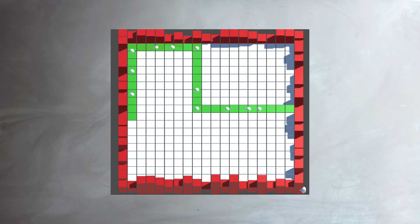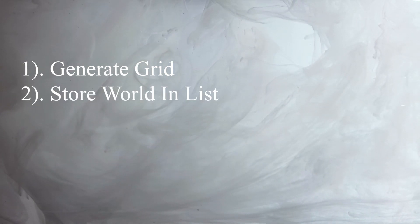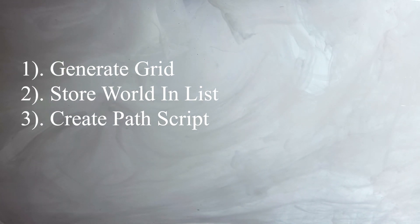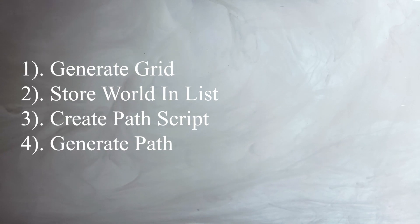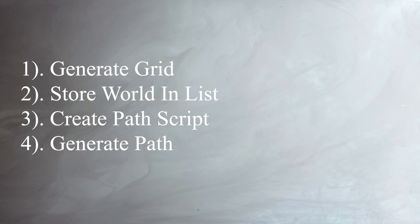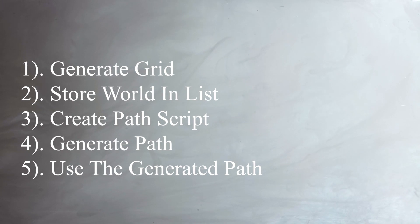Before we start coding, let's take a look at what we are trying to do and how. For the path generation, we need to be able to do a couple of things. The first one is generate a grid, then store the grid tiles into a list, create a path object that will use the generator tiles to create a path, generate the path by moving a specific direction in our list depending on the start and end position, and finally return that path to our world generator.